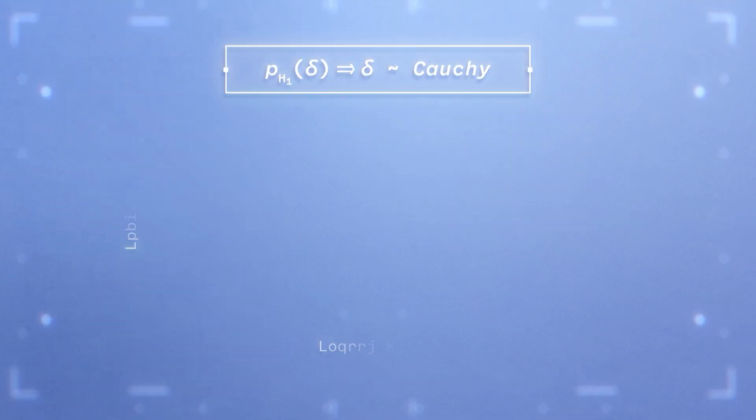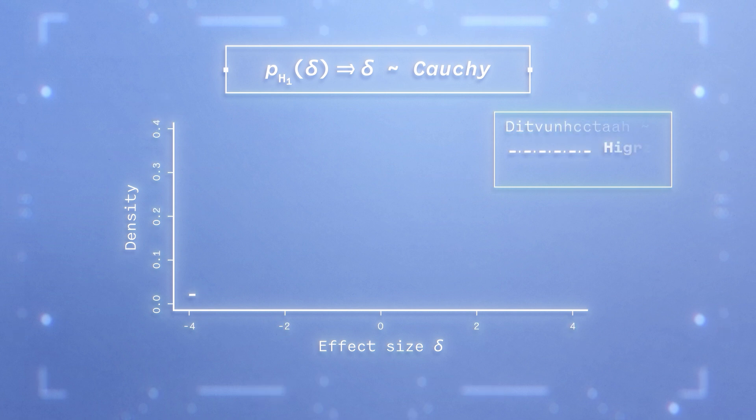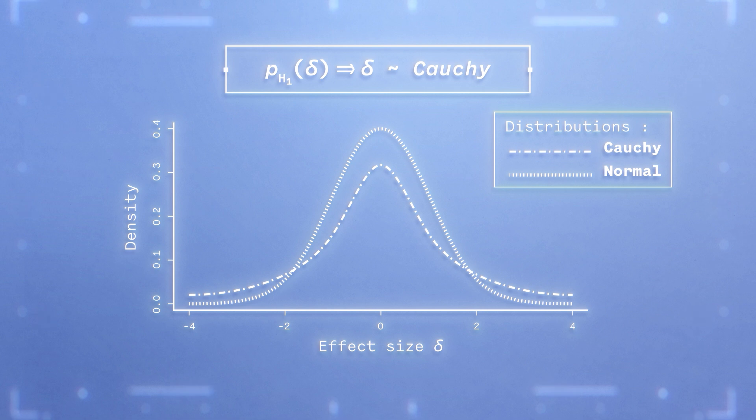It uses a Cauchy distribution, which is a t-distribution with a single degree of freedom. The shape of a Cauchy distribution resembles a normal distribution but has heavier tails. This means that the Cauchy distribution allocates more prior probability to stronger effect sizes than a normal distribution. It is centered on a value of 0, meaning that effect sizes close to 0 are assumed to be the most likely to be true before seeing data. In this sense, the JZS is a default prior, meaning that it reflects a minimum degree of information and accommodates a wide range of situations.